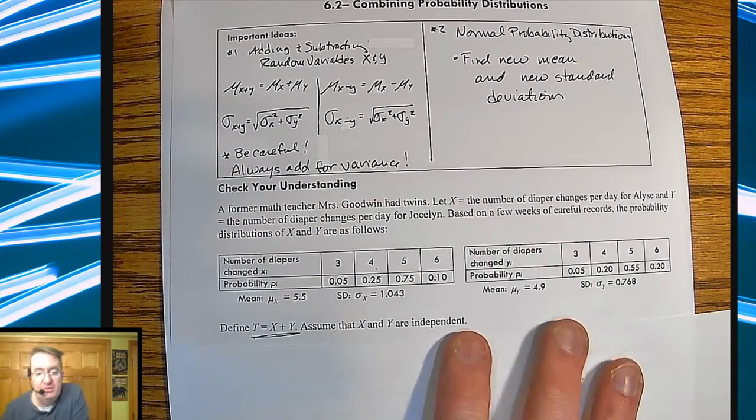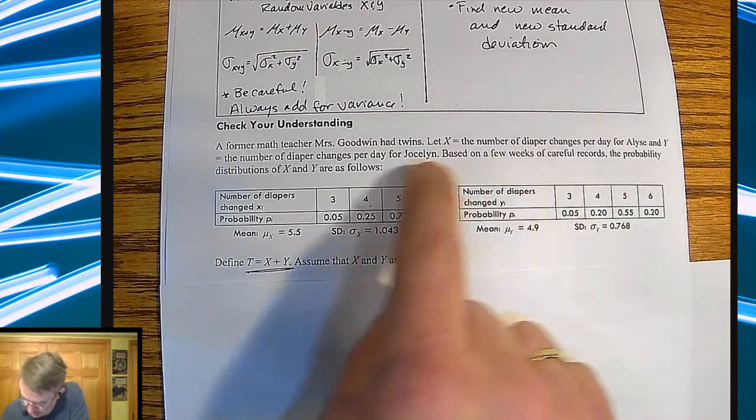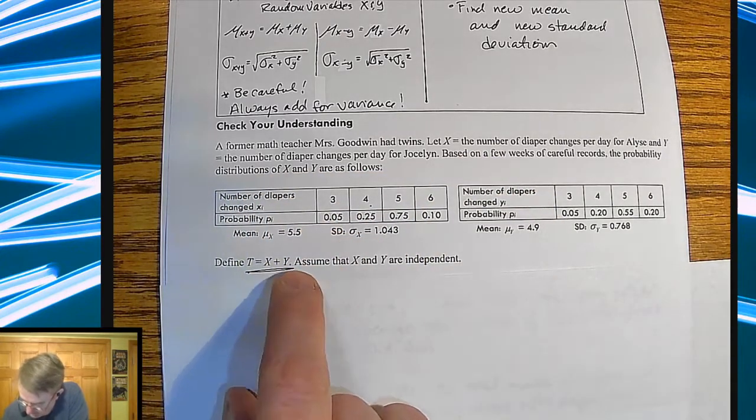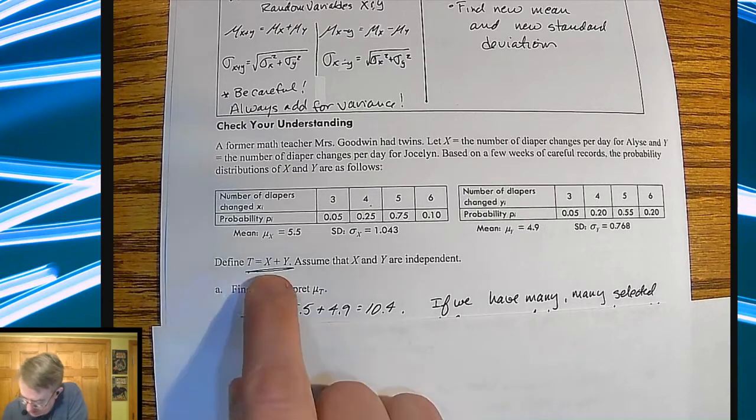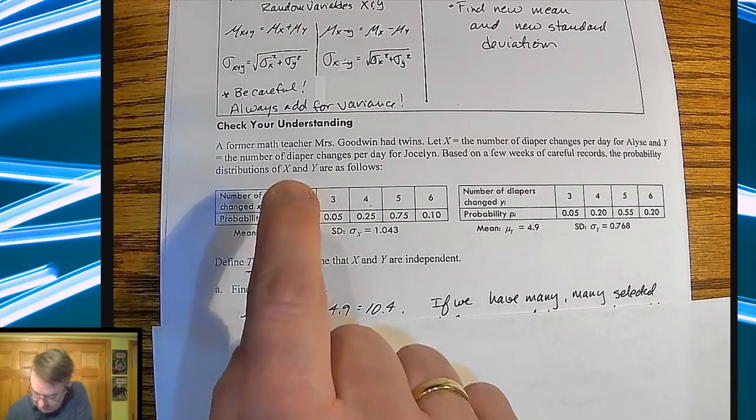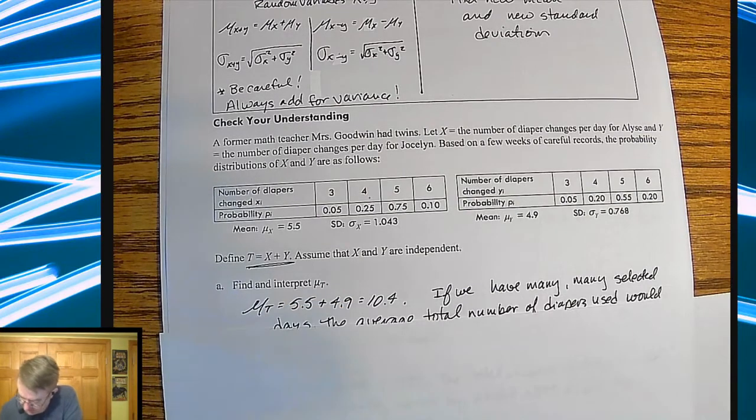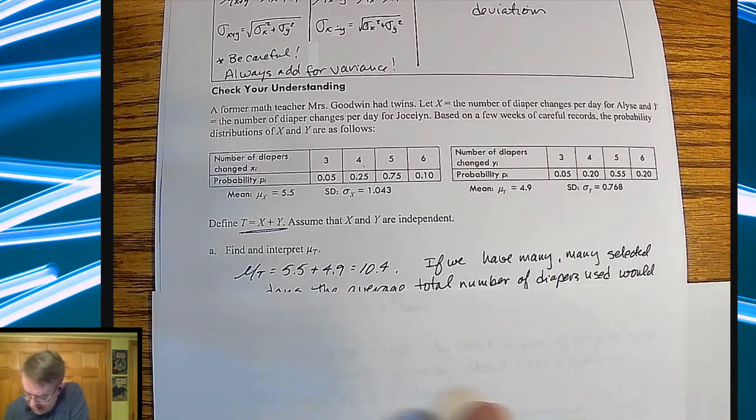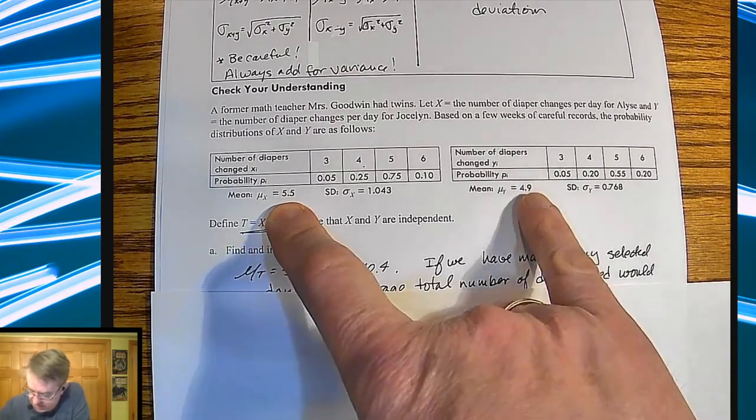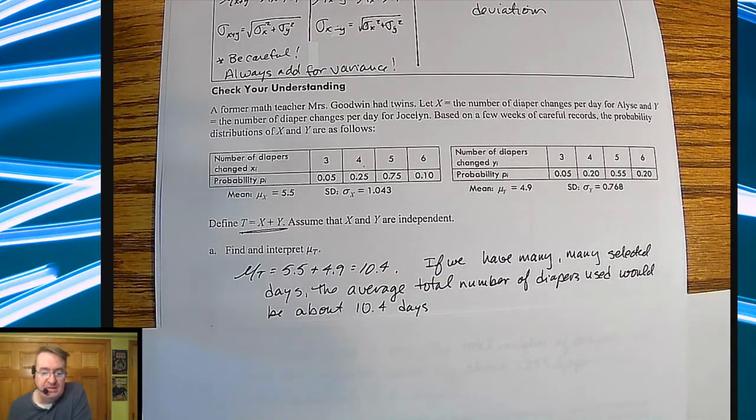So the first question was, we're going to assume, well, first of all, we're assuming independence, but define T is equal to X plus Y. So T is up here, the number of diaper, so we're saying T is equal to X plus Y. So what is X plus Y? So that means that T is the total number of diaper changes between Elise and Jocelyn. So in find and interpret X, or the mean of T. So you're going to just add the two means together. I'm going to take this five and a half diaper changes here, the 4.9 diaper changes here, and just add them together. So we get 10.4. So if we have many, many selected days, on average, the total number of diapers used, and if you want to add by Elise and Jocelyn, would be about 10.4.